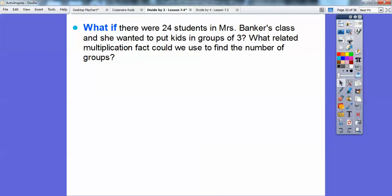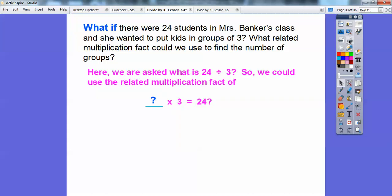So what if there were 24 students in Mrs. Baker's class and she wanted to put kids in groups of 3? What related multiplication fact could we use to find the number? So we're looking for 24 divided by 3. So we could ask a related multiplication fact of what number times 3 equals 24? Well 8 times 3 equals 24. So 24 divided by 3 equals 8. And then this also says 24 divided by 3. Notice the 8 is placed up above the last digit.